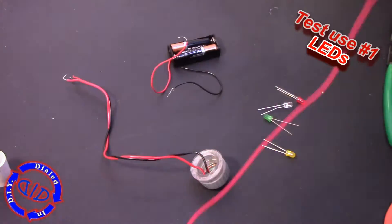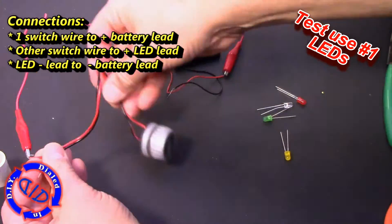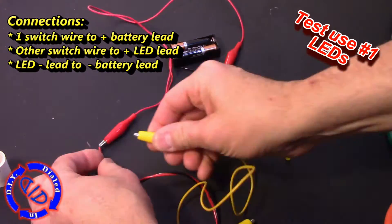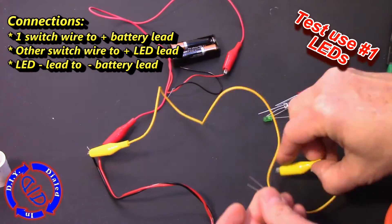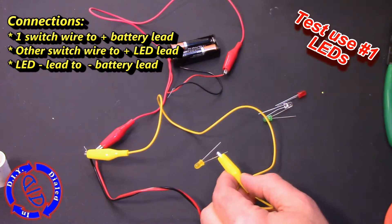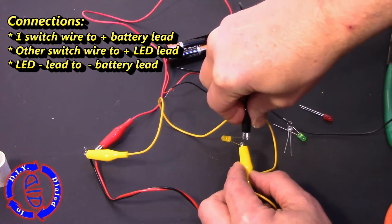For our first test of our switch we're gonna wire it in with a couple of AAA batteries and some LEDs. I'm connecting the switch in line between the positive lead on the battery and the positive lead on the LED itself.